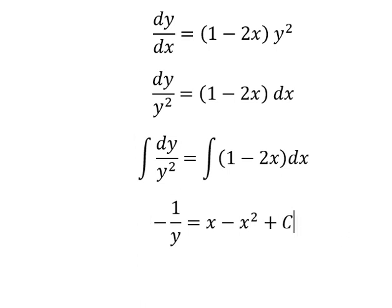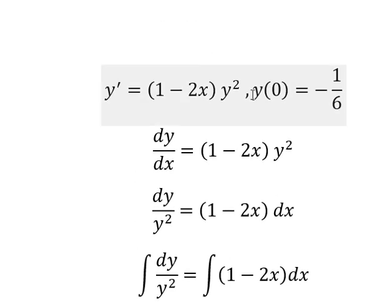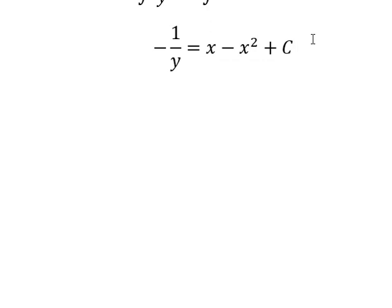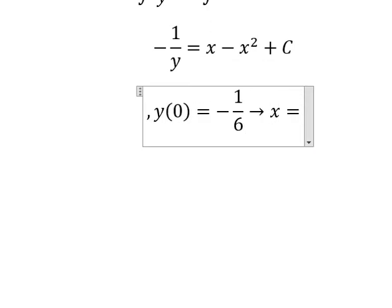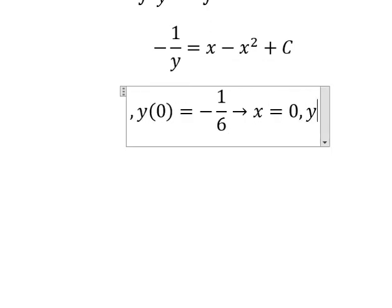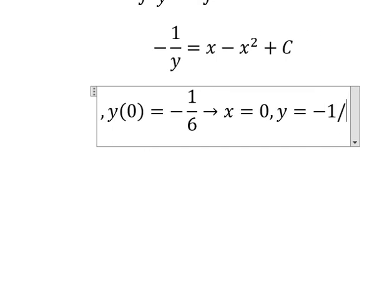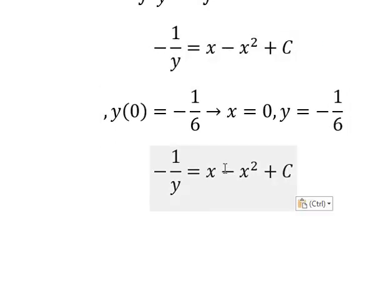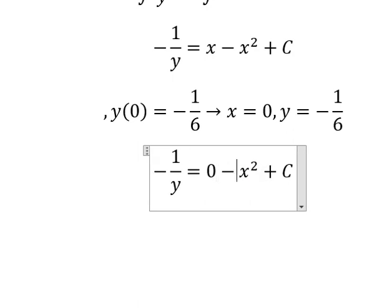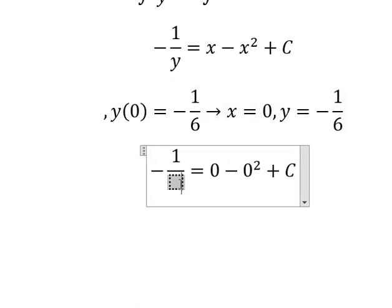Now we have the conditions. That means when x equals 0, y equals negative 1 over 6. So I will put 0 here, 0 here, negative 1 over 6 here.